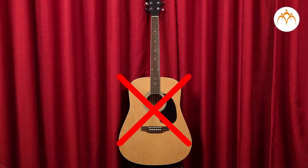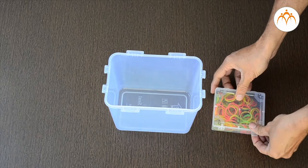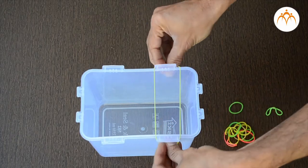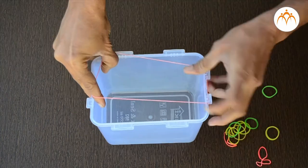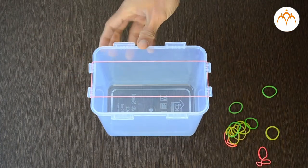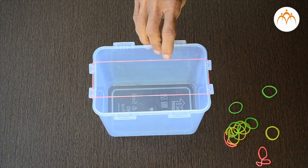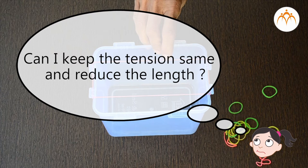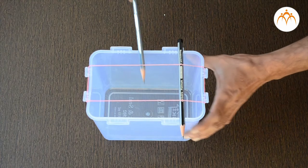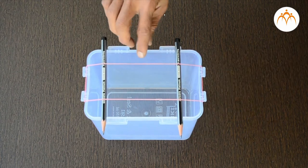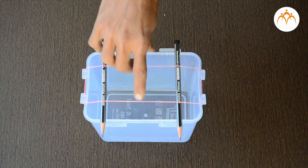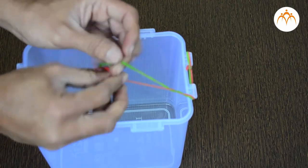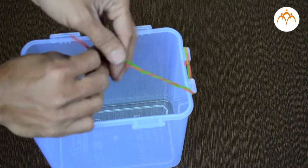No guitar? No problem. We can take this rubber band and try these things out ourselves. We'll attach it to this plastic container. Increase the length and pluck it again — tension has also increased. Can I keep the tension the same and reduce the length? This is how we do it — I will use the pencil. To increase the thickness of the rubber, we can attach another rubber band, twist it and try it again.